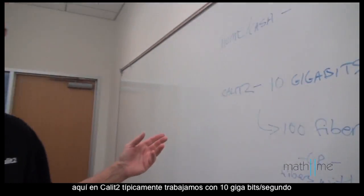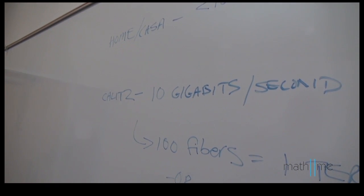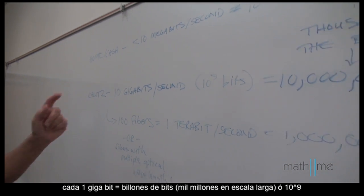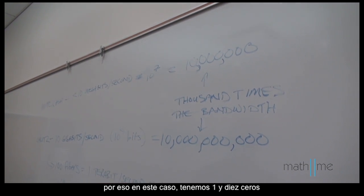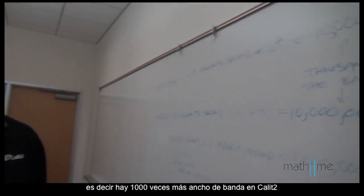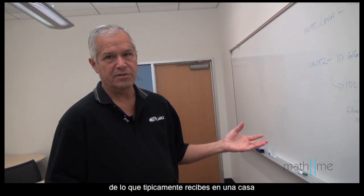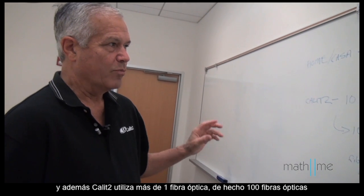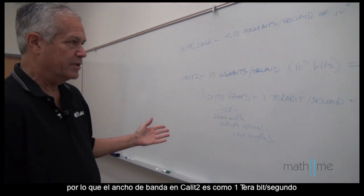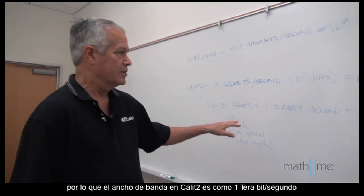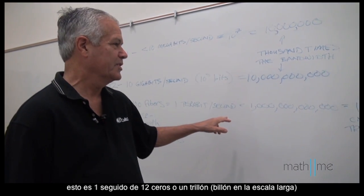Here at Cal-IT2, we typically work with 10 gigabit per second ethernet. Each gigabit is a billion bits, or 10 to the ninth. And so that's 1 followed by 10 zeros. So there's a thousand times higher bandwidth here at Cal-IT2 than you typically get to a home. Beyond that, we have more than a single fiber here — we actually have 100 fibers. So the aggregate bandwidth here at Cal-IT2 is more like a terabit per second, that's 1 followed by 12 zeros, or 1 trillion.